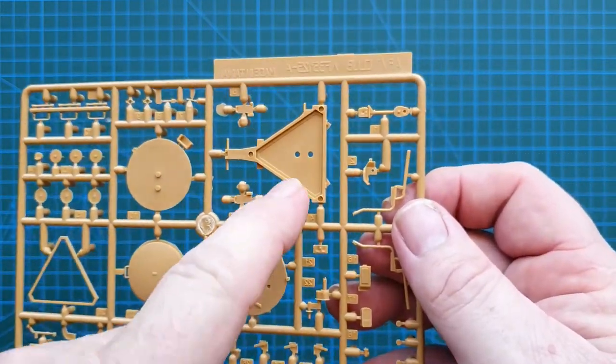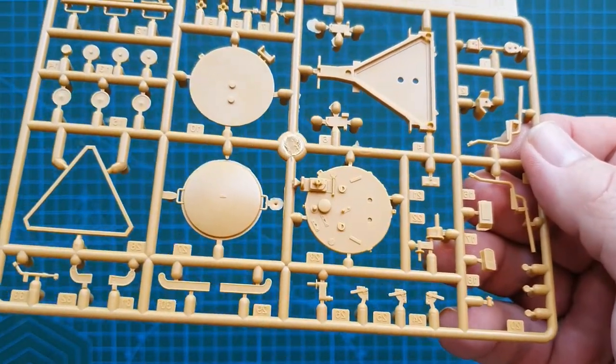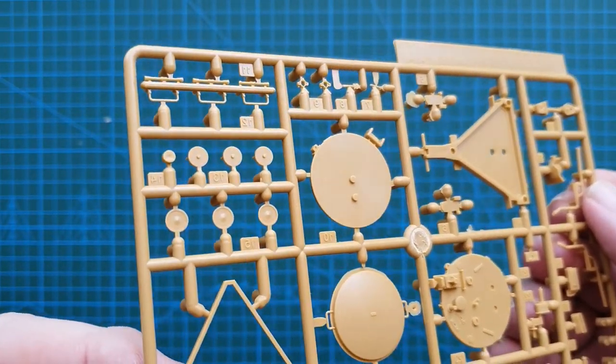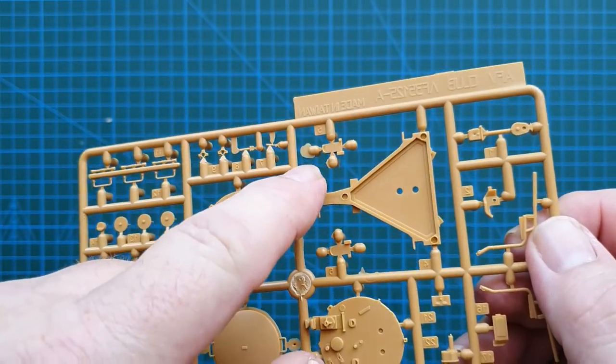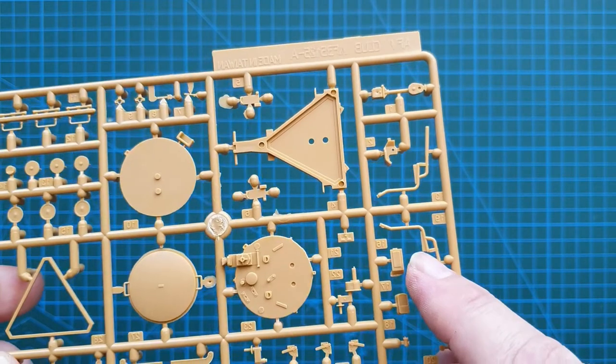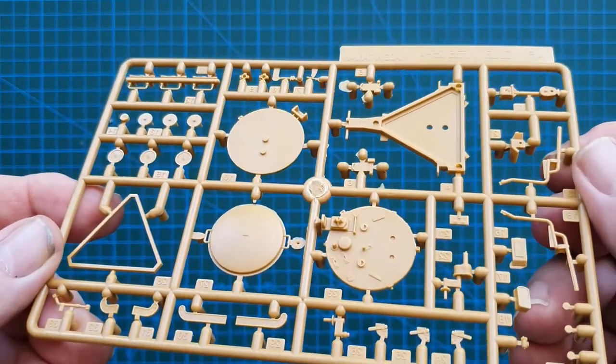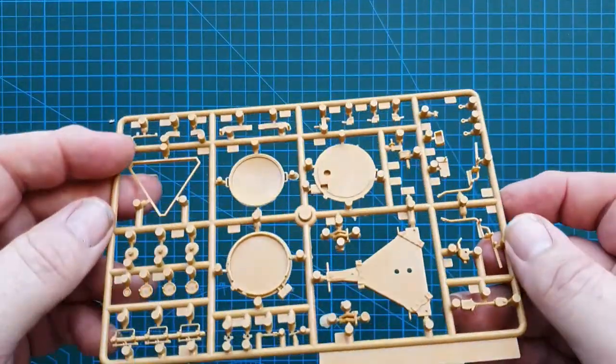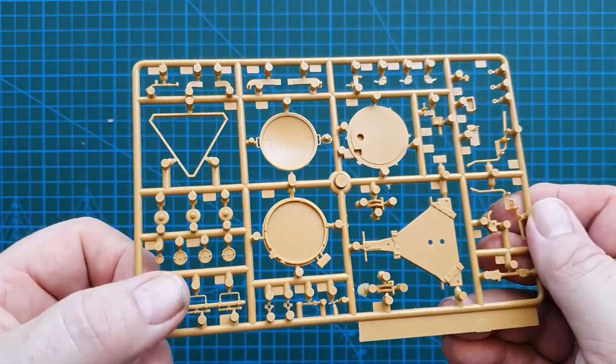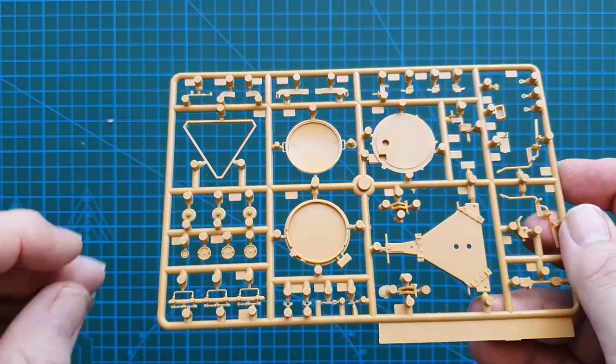Then you've got the next sprue which is the base of the searchlight. Again beautiful detail, very fine, very sharp. I can't see any flash, although a little bit of flash there, so there is flash on it but not much. But some extremely fine pieces to take off, especially this without breaking it. Nice detail though, really sharp. Not much on the other side, a little bit of detail up here. But yes, like I said, have a look at it - some very very fine detail. So that is the base of the searchlight.